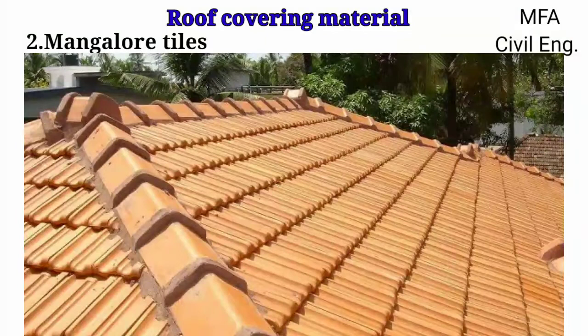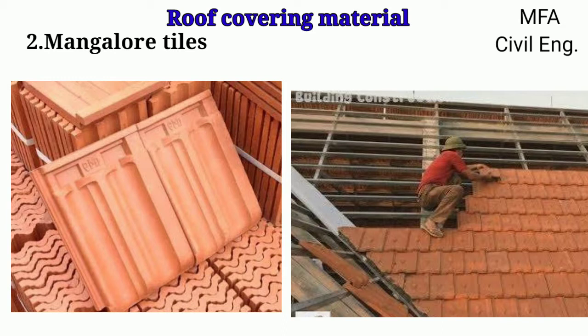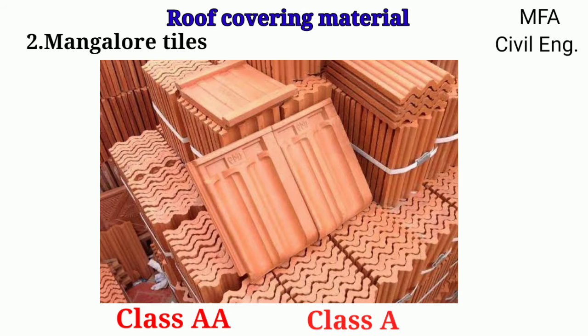These types of tiles are flat roof tiles especially made in tile factories. They have a suitable key and protection for proper fixing to the roof. These tiles are well burnt with a uniform texture and are classified as class AA tiles and class A tiles based on their absorption percentage and breaking load.